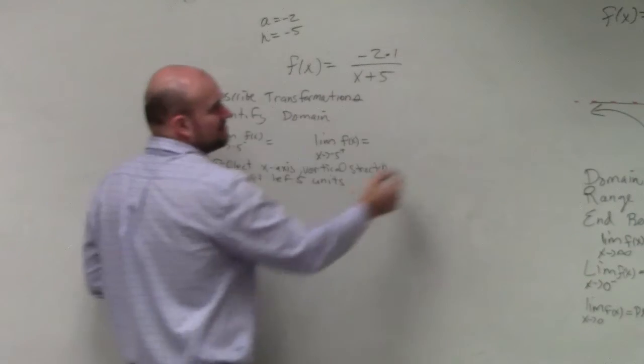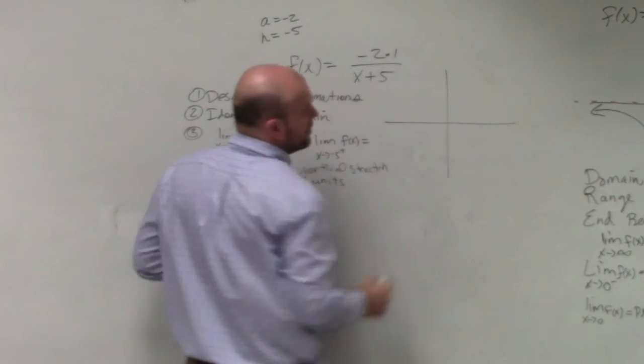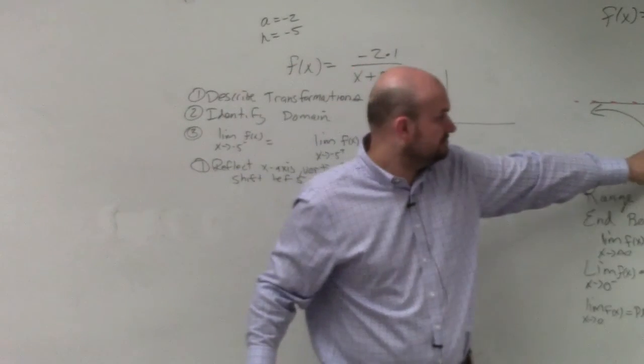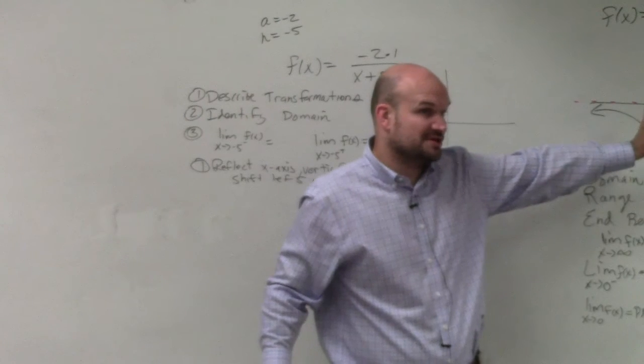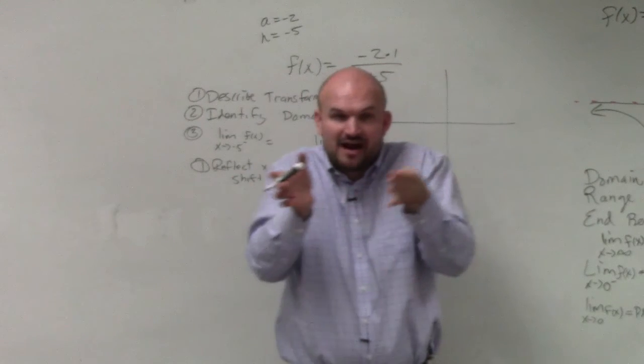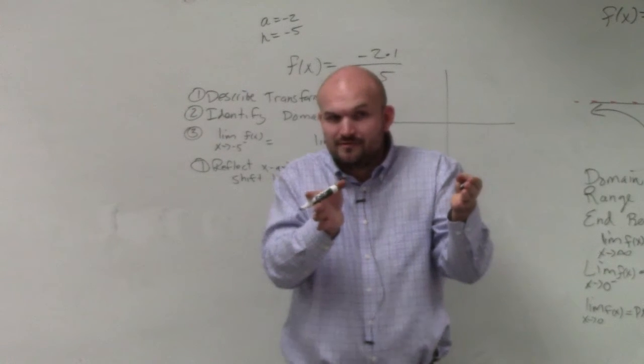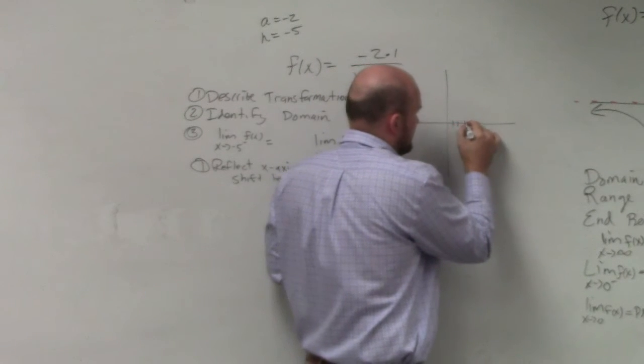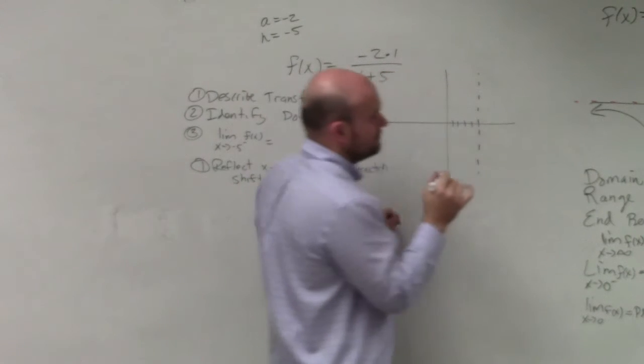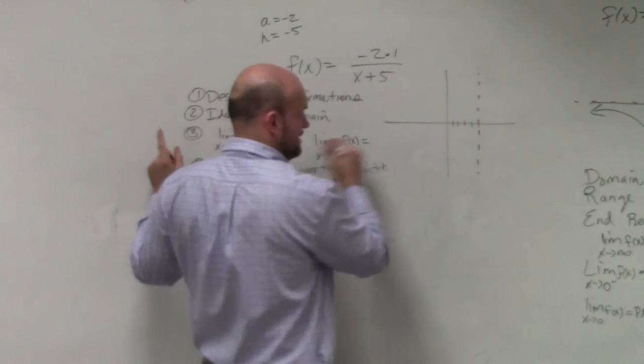Now, to really make sense of this, I'm just going to graph it. So we have this graph over here, where you see my vertical asymptote is at 0. So if I shift that graph 5 units—it's going to the left—where is my new vertical asymptote? It's going to be at -5.